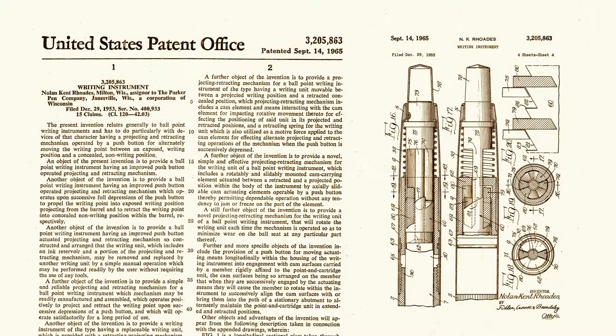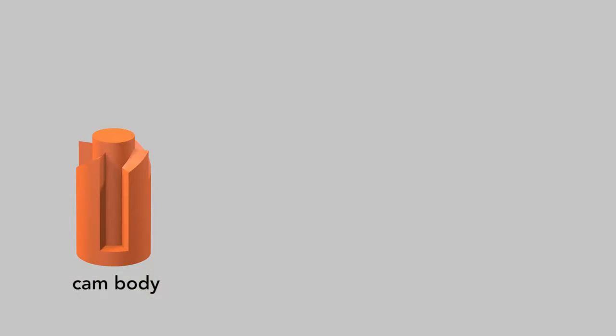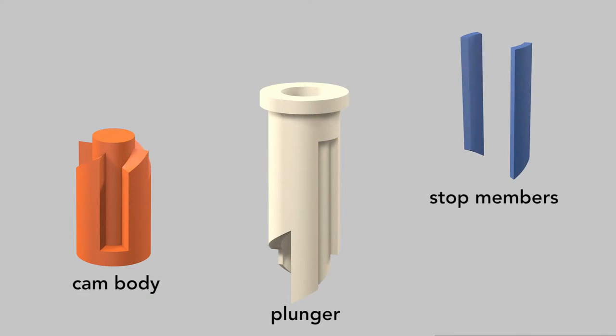A Parker Pen Company patent describes the three parts that produce the pen's click. The cam body, the tubular plunger, and the stop members.